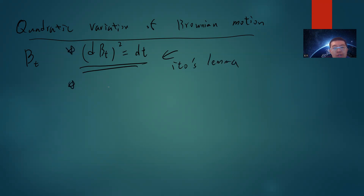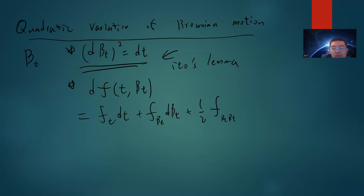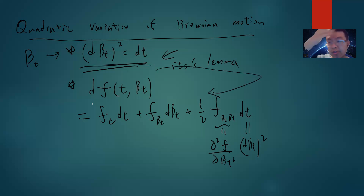Because once you know this, given any function F of T with B of T, if you do the differentiation — that's a Taylor expansion — you can say that this is F_T dT and F of B_T dB_T. But since this term is still alive, you have F of B_T, the second derivative, times dT, and this is dB_T squared.